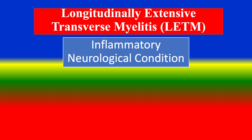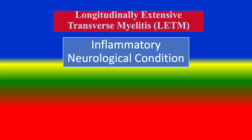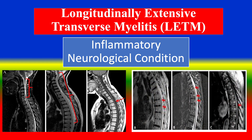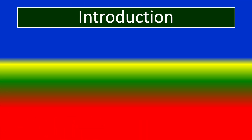Longitudinally Extensive Transverse Myelitis — this is an inflammatory neurological condition. CT findings of the C-spine and thoracic spine are discussed. Introduction.